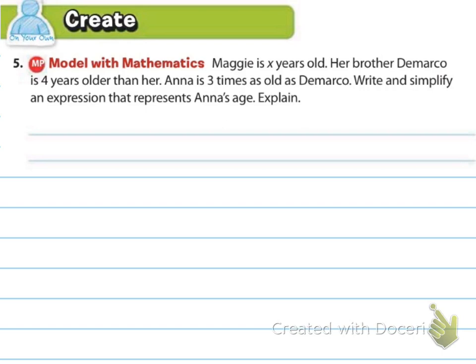Alright, number 5. It says model with mathematics. Maggie is X years old. Her brother DeMarco is 4 years older than her. Anna is 3 times as old as DeMarco. Write and simplify an expression to represent Anna's age.